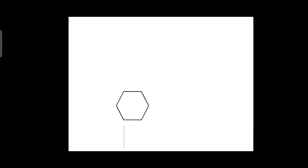Next, problem number 3: draw the involute of a regular hexagon with side 20 mm. First, draw a regular hexagon with side 20 mm. Then locate point P in the right side corner and note the remaining points 1, 2, 3, 4, 5, 6. Draw the extension line from each point: point 1 first, next point 2, point 3, point 4, point 5, and finally point 6.